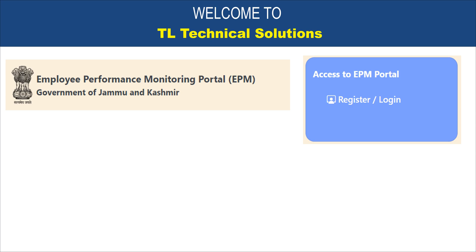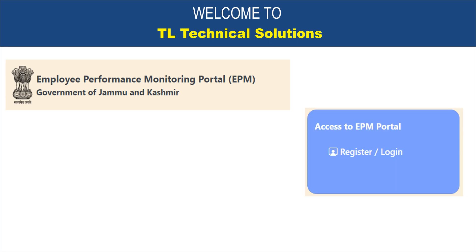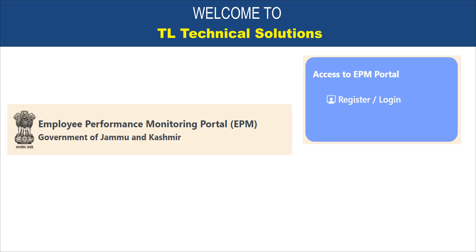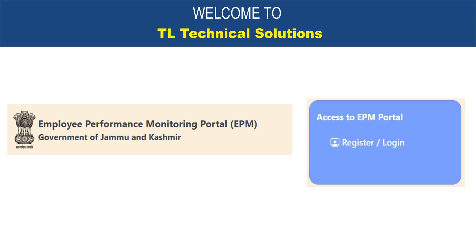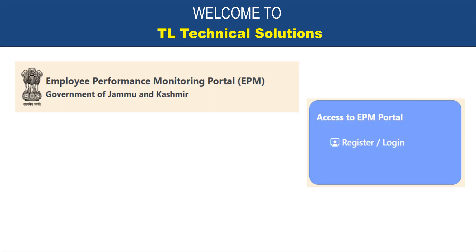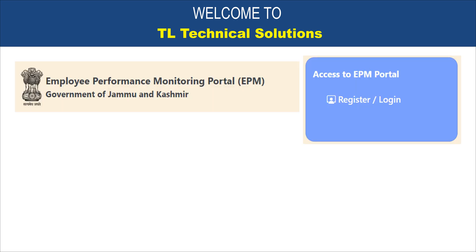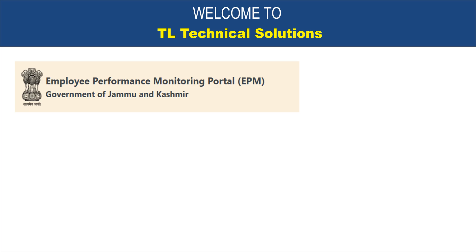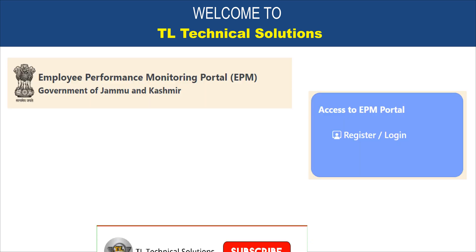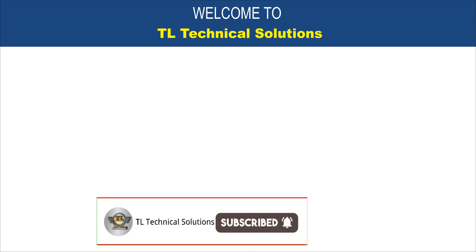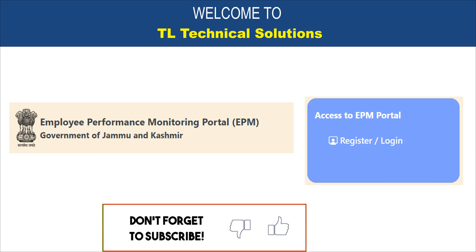Hello viewers, welcome to my channel TL Technical Solutions. As you know, the government of J&K has issued an order for government employees. As per the article, all the employees of J&K have to submit a progress report every month by or before the 7th of the next month on the EPMS portal.